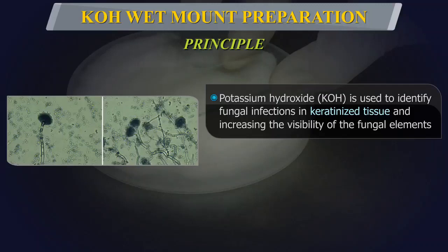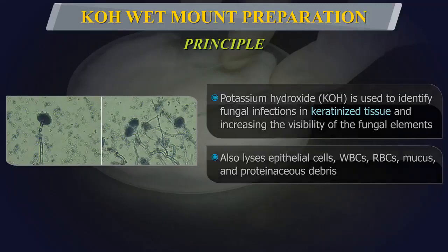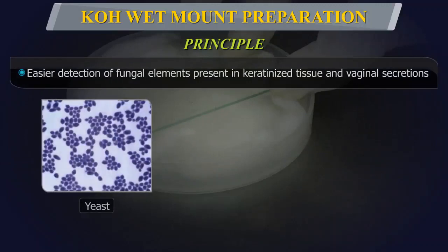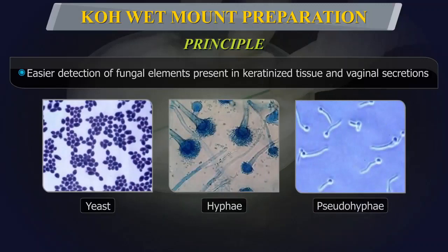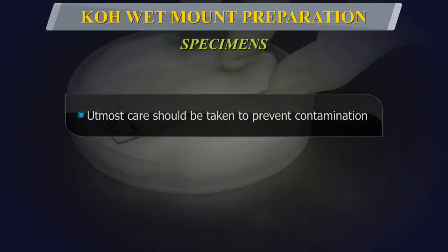KOH also lyses epithelial cells, white blood cells, red blood cells, mucus, and various other proteinaceous debris. This permits easier detection of fungal elements such as yeast, hyphae, and pseudohyphae present in keratinized tissue and vaginal secretions.